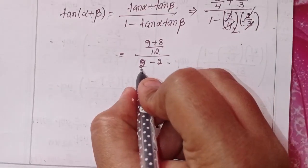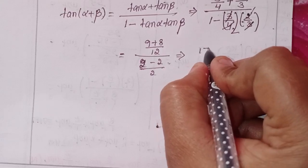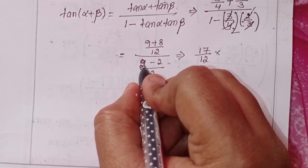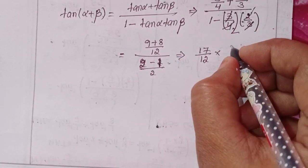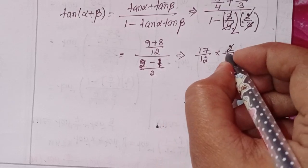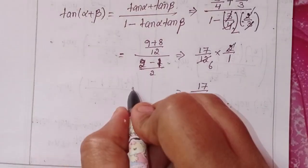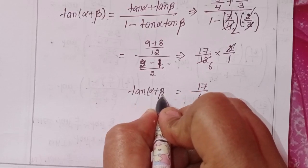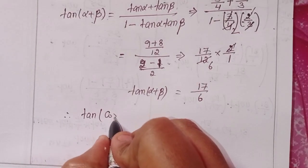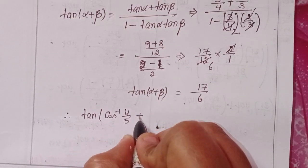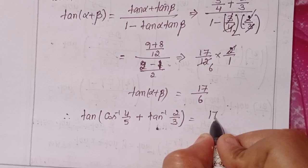By cross multiplication, numerator: 9 + 8 = 17 over 12. Denominator: 1 - 1/2 = 1/2. So tan(α + β) = (17/12) ÷ (1/2) = 17/6. Therefore tan(cos⁻¹(4/5) + tan⁻¹(2/3)) = 17/6.